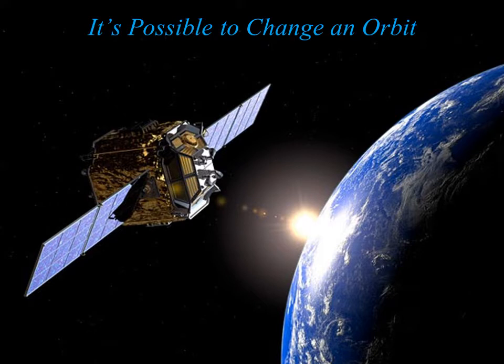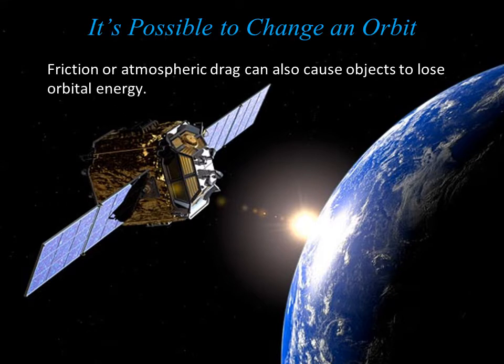Friction can also cause objects to lose orbital energy. For satellites orbiting Earth, if the orbit is low, the satellite will experience drag from Earth's thin atmosphere. This drag gradually will cause the satellite to lose orbital energy until it finally plummets towards Earth.